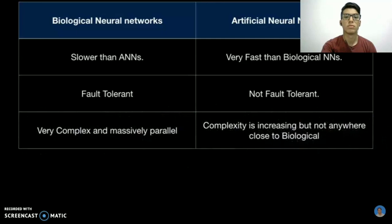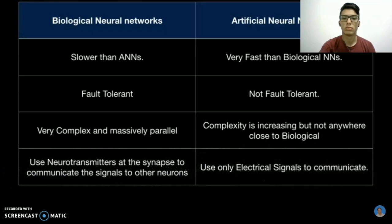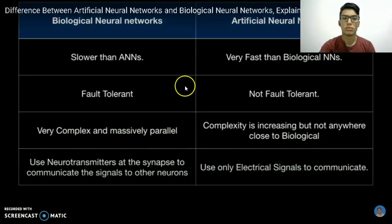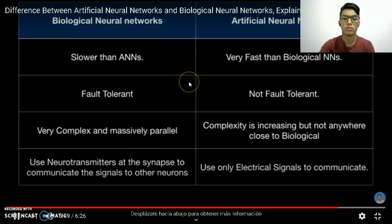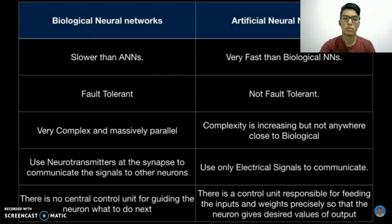The next one is biological neural networks are very complex and massively parallel operating models, whereas complexity is increasing but not anywhere close to biological in the case of artificial neural networks. The next point is that biological neural networks use chemicals called neurotransmitters. In biological neural networks, there is no central control unit for guiding the neuron what to do next.